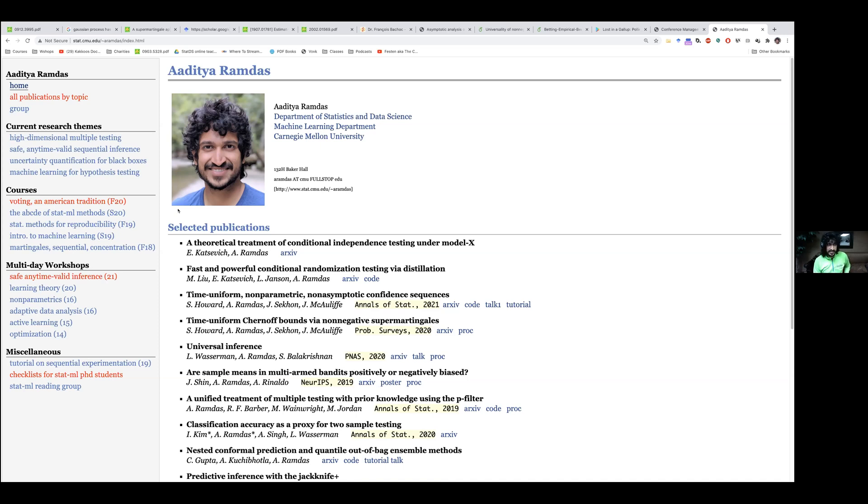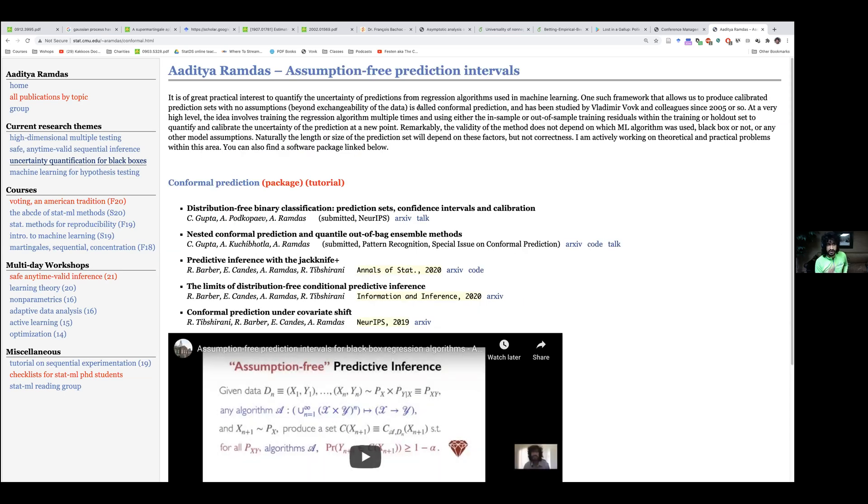My name is Aditya Ramdas. I'm jointly appointed in the Department of Statistics and Data Science and the Machine Learning Department, and I currently co-advise students and postdocs in both departments. My research themes, I have several of them. I'll go to the one that's most relevant, I think, to machine learning people, and that's what I call assumption-free quantification of uncertainty.